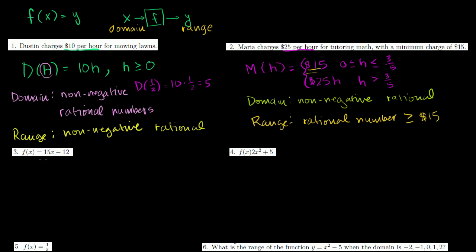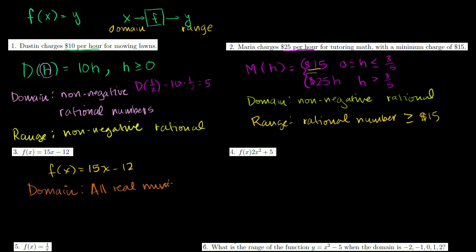Now we have more abstract function definitions where we can use any real number. We have f(x) = 15x − 12. What's the domain? I could stick any real number x in here — I'm just going to multiply it by 15 and subtract 12. I could put pi, the square root of 2, or e there. So the domain is all real numbers. And the range: this function can take on any value. I can get to any negative value by making x negative enough, I can get 0, and any positive value. So the range is also all real numbers.